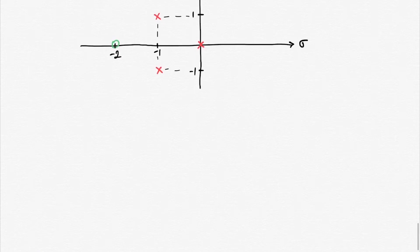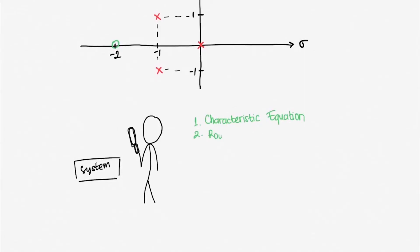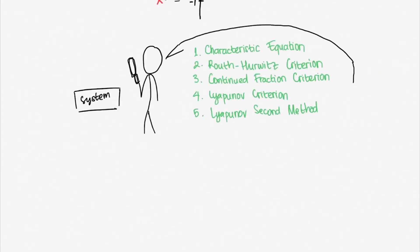Finally, let's start analyzing our system. There are so many methods out there on analyzing the stability of a system. There's characteristic equation, there's the Routh-Hurwitz criterion, there's the continued fraction criterion, there's the Lyapunov criterion, and etc. We will only discuss the characteristic equation method and the Routh-Hurwitz criterion.